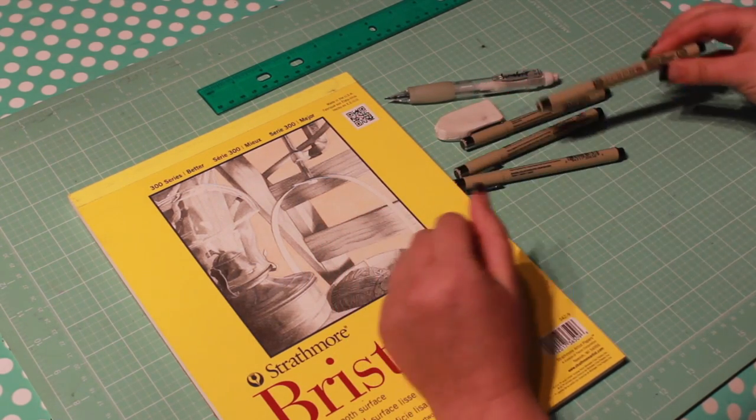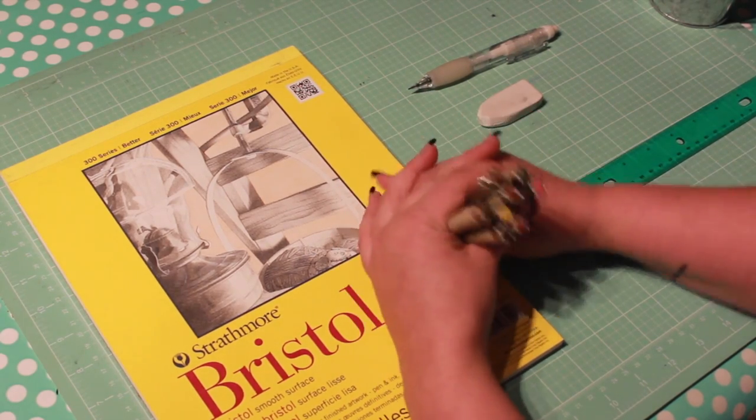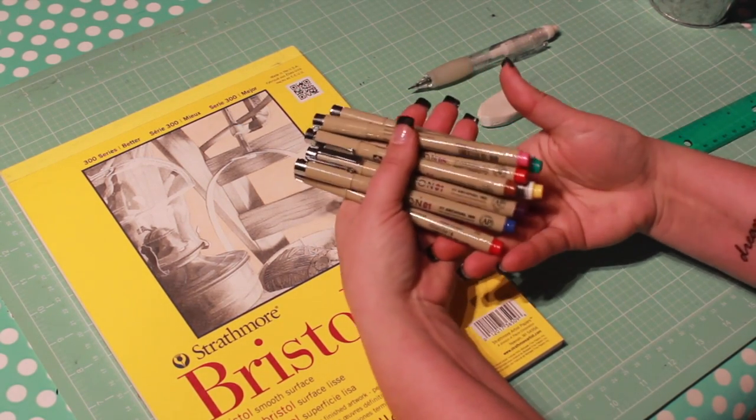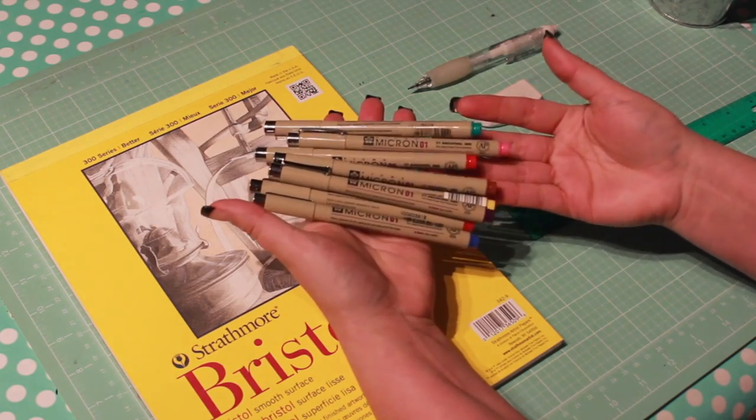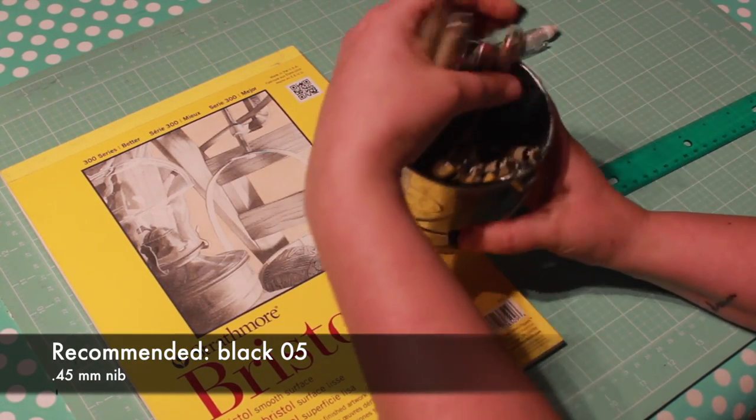The number on the pen corresponds with the nib size. The larger the number, the bigger the nib. If you're just starting out and only buy one single pen, I recommend buying a black 05, which has a 0.45mm nib.